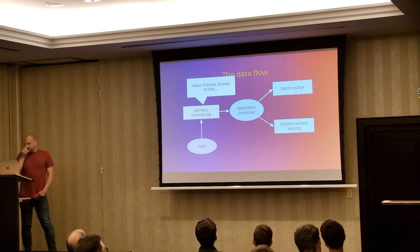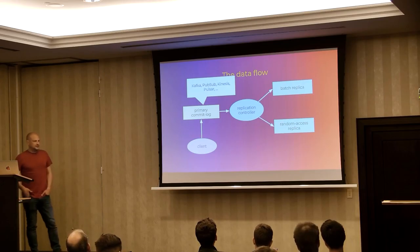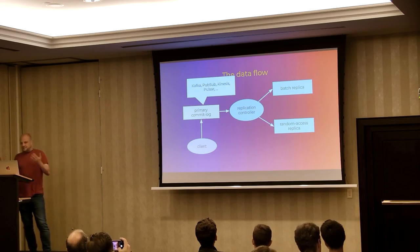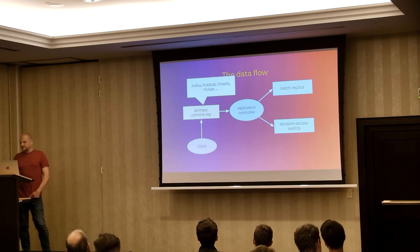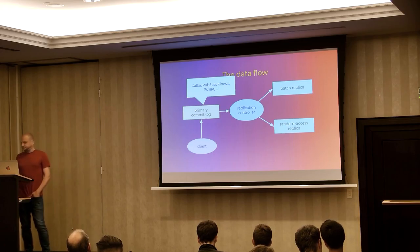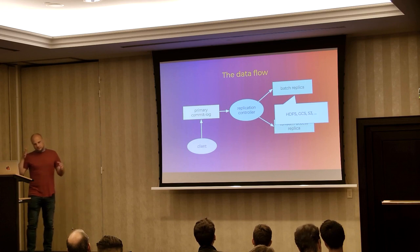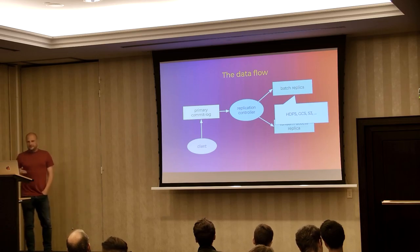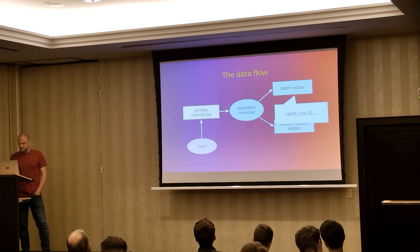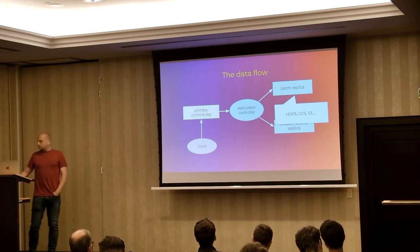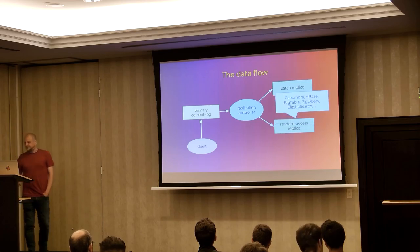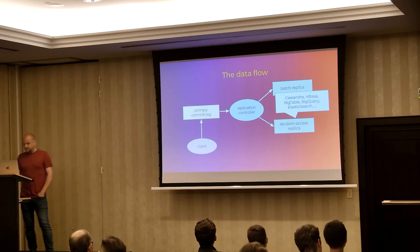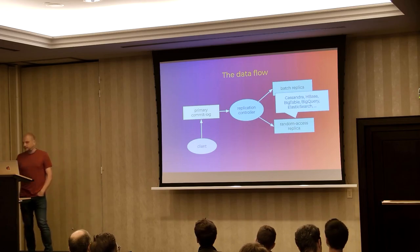The primary commit log can be anything that can behave like a commit log — typically Kafka, Pub/Sub, Kinesis, or Pulsar. The batch replica is a batch version of the commit log, rolled periodically and stored in batch systems like HDFS, Google Cloud Storage, S3, or similar. The random access replica is typically Cassandra, HBase, Bigtable, BigQuery, Elasticsearch — something that can return queried data in real time.